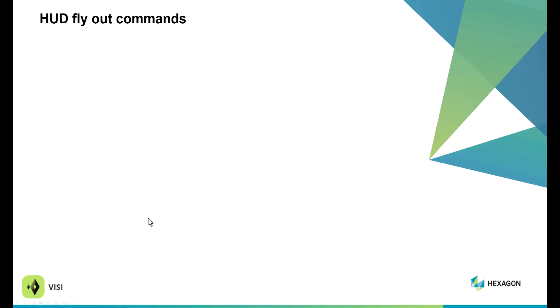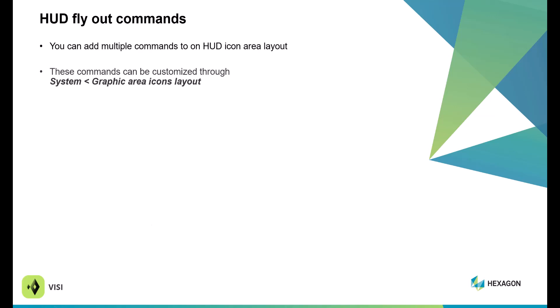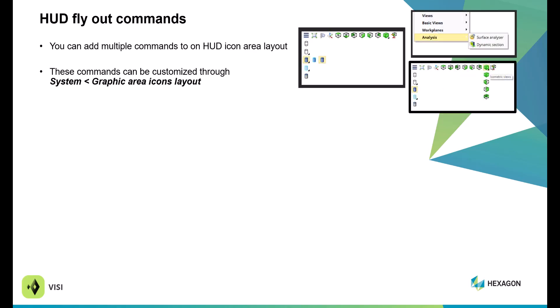Hood flyout commands: you can apply multiple commands to one individual hood flyout. This is available within System Settings, Graphic Icon Area Layouts. You can actually add multiple commands to different commands — for example, the shaded command, the analysis commands, and so on.